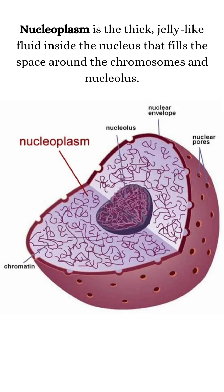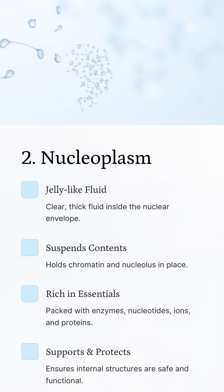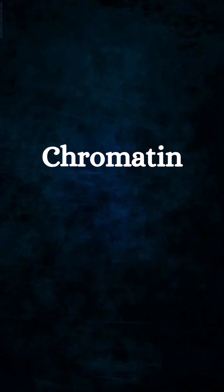Nucleoblast. It is a clear, jelly-like fluid inside the nuclear envelope. It is rich in nucleotides, ions, and proteins. It supports and protects the things inside the nucleus, helps in the movement of materials within the nucleus, and provides a place for chemical reactions inside the nucleus to happen.